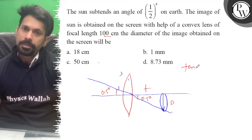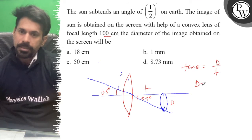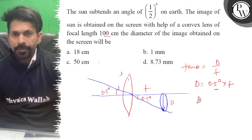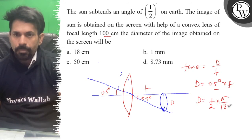So tan theta we can write d/f, so d is nothing but 0.5 degree into f. So 1/2 into π/180 into f.